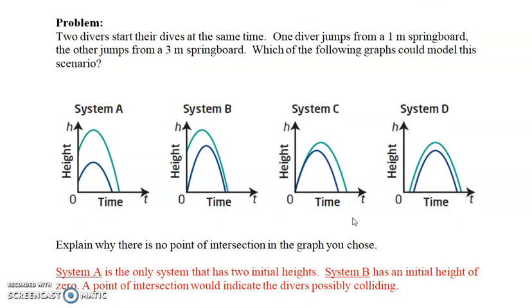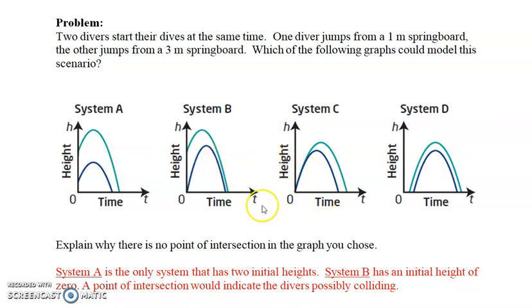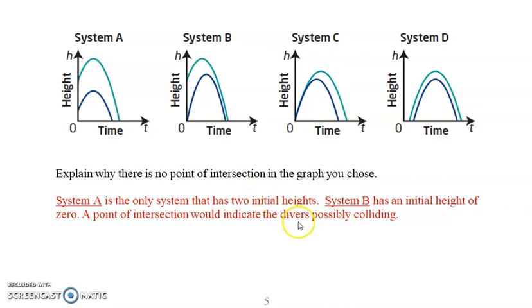The next problem says two divers start to dive at the same time — one diver jumps from one meter and the other from three meters. B, C, and D can't work because one of those systems has an initial height of zero for one of the divers. The best scenario would be system A — it's the only system that has two initial heights. System B has one diver starting at zero height, which doesn't make sense. If there were a point of intersection, that would mean the divers could possibly be colliding, or crossing at the same height at the same time.